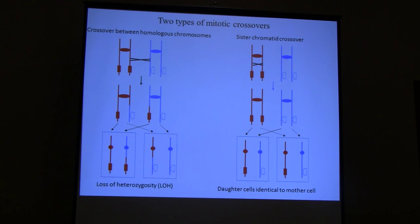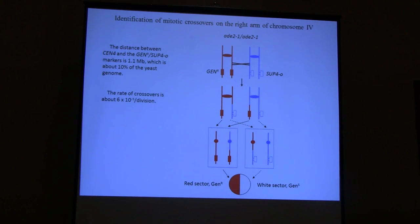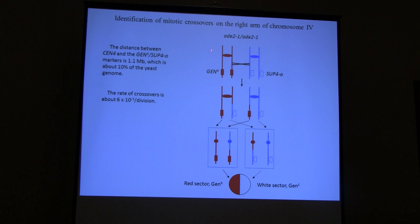To map mitotic crossovers you need a way of detecting when a crossover has occurred via loss of heterozygosity, and markers distributed along the chromosome so you can determine where the event occurred. The system we used screens for crossovers on the right arm of chromosome 4 — the longest arm in the yeast genome, containing about one megabase of DNA, roughly 10% of the yeast genome. We look at crossover frequency between the centromere of chromosome 4 and a marker placed near the telomere.